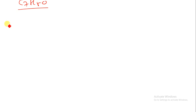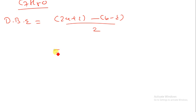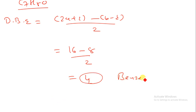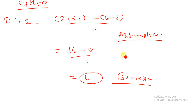Let us understand one more example: molecular formula C7H8O. Calculate DBE: (2×7 + 2 - 8) / 2 = (16-8)/2 = 4. A DBE of 4 means the compound should have a benzene ring. Write down in your assumptions: the compound should have a benzene ring.